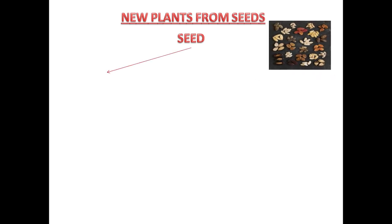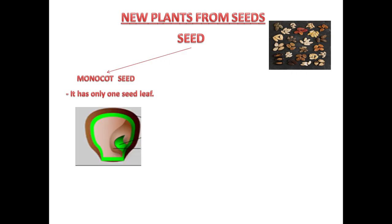Here we will learn how to grow new plants from seeds. See the picture — these are different types of seeds which can grow into new plants. The first type is the monocot seed. It has only one seed leaf. Here you can see its parts: the seed coat, the baby plant, and the seed leaf.